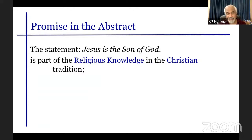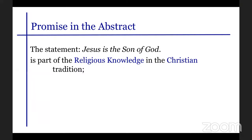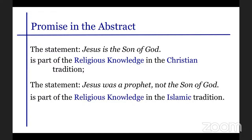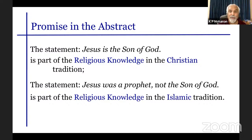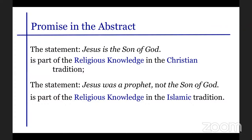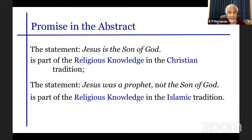To give you some examples of the different kinds of knowledge: you find the statement in the Bible, 'Jesus is the son of God,' which is part of religious knowledge in the Christian tradition. The statement that Jesus was a prophet, not the son of God, is part of the religious knowledge of the Islamic tradition. These are two conflicting propositions, and these two are not part of academic knowledge.